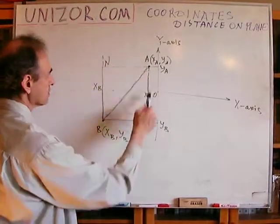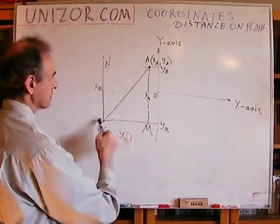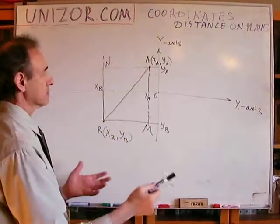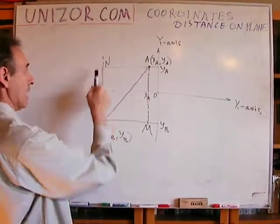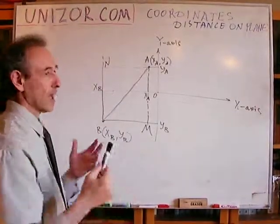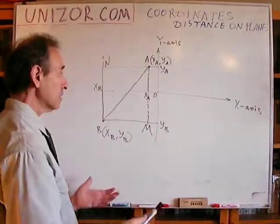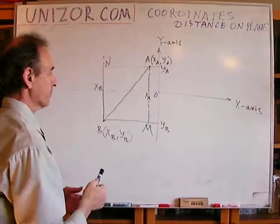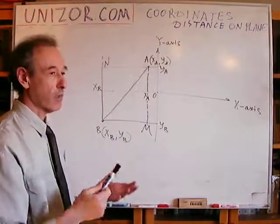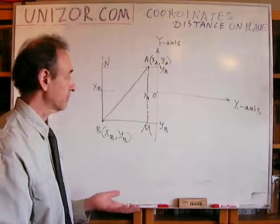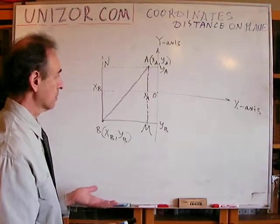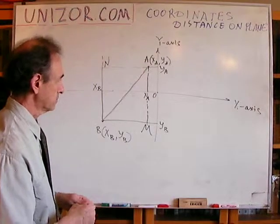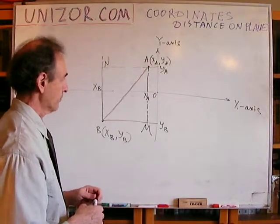So, A, B, M is a right triangle, as well as A, B, N, and A, B is a hypotenuse, which means we can use the Pythagorean theorem to get its lengths. But now, let's talk about what are the catheti of this particular right triangle.